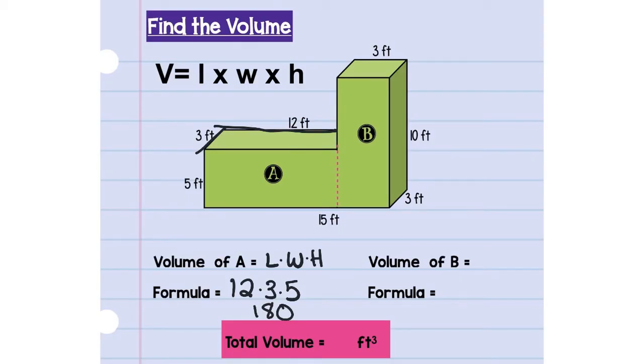For volume B, we have also length times width times height because this is also a rectangular prism. So our length and our width are both 3 in this one. So 3 times 3 times the height, which is 10. So then we have 9 times 10, which we know is 90. So then we would do 180 plus 90, which would give us 270 feet cubed.